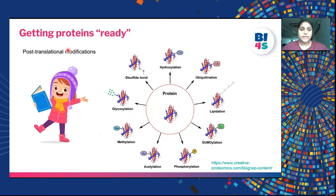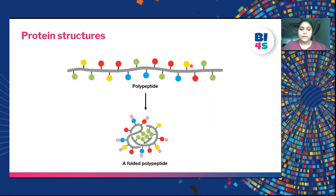After proteins are translated, they need to get ready for their work, just as RNAs are processed after transcription. There are different types of post-translational modifications, like hydroxylation, ubiquitylation and lipidation, depending on what function the protein has to perform. After post-translational modification, the protein is folded into a polypeptide and becomes a functional protein.